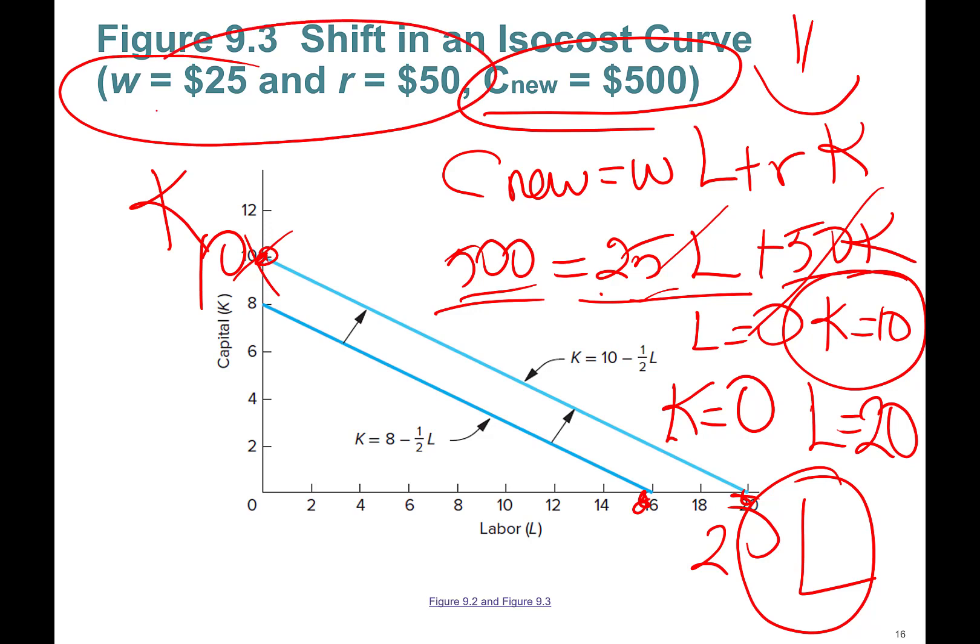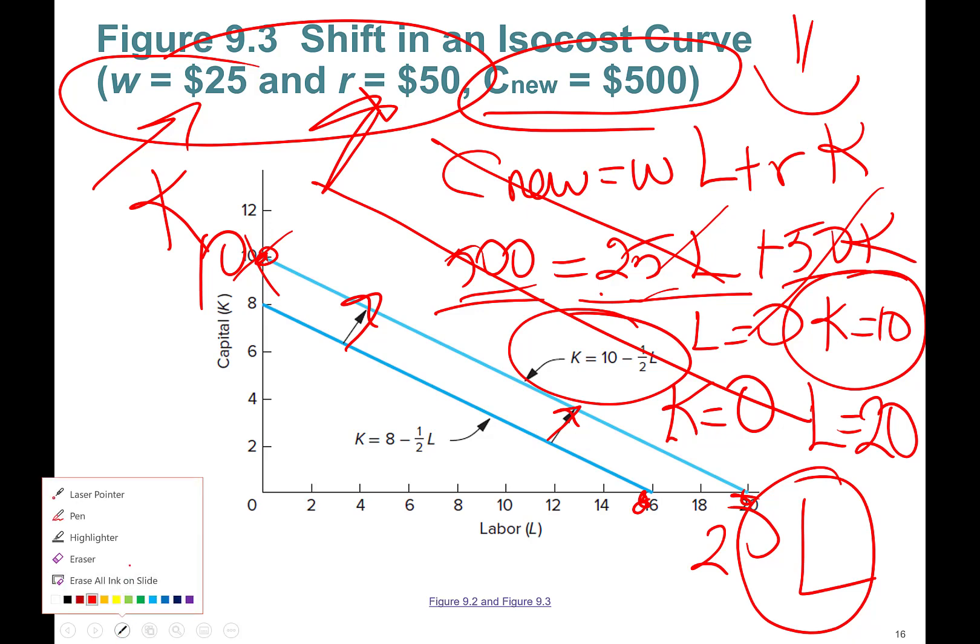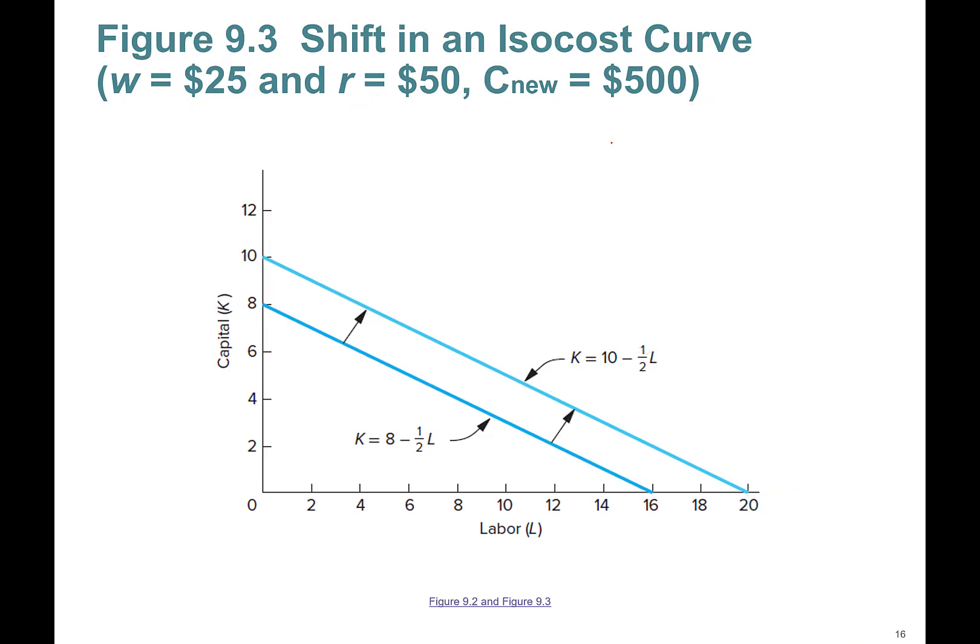Did the slope change? The slope didn't change because the wages and the rental rate did not change. So equation looks like this. If you can have a higher cost, then you're moving to a higher isocost curve.